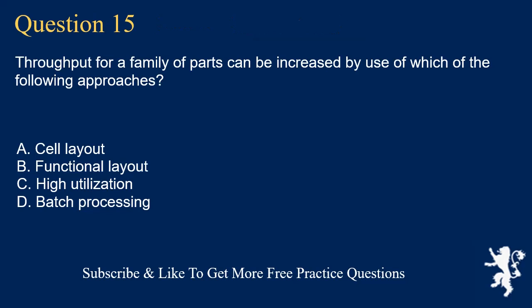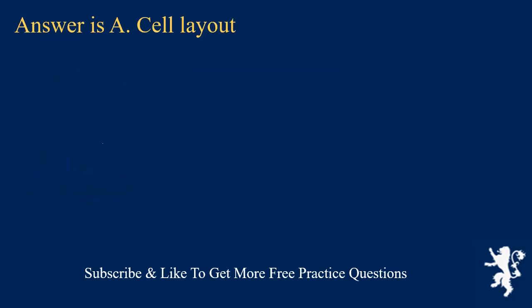Question 15. Throughput for a family of parts can be increased by use of which of the following approaches? A. Cell layout. B. Functional layout. C. High utilization. D. Batch processing. Answer is A. Cell layout.